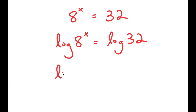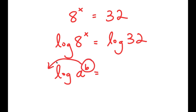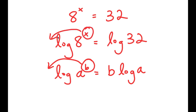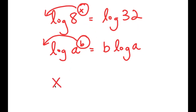Now, if I have something in the form log of a to the power of b, I can move the exponent b to the front of the logarithm. So this turns into b times log a. So log a to the power of b is equal to b times log a. In the case of log 8 to the power of x, we can think of x as b, so we can move x to the front. So I get x times log of 8 is equal to log of 32.